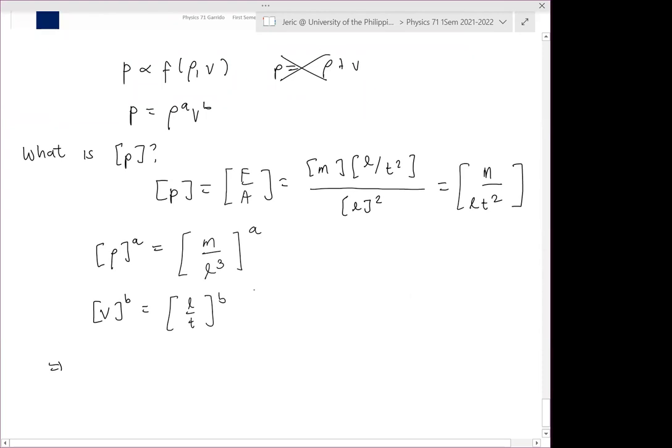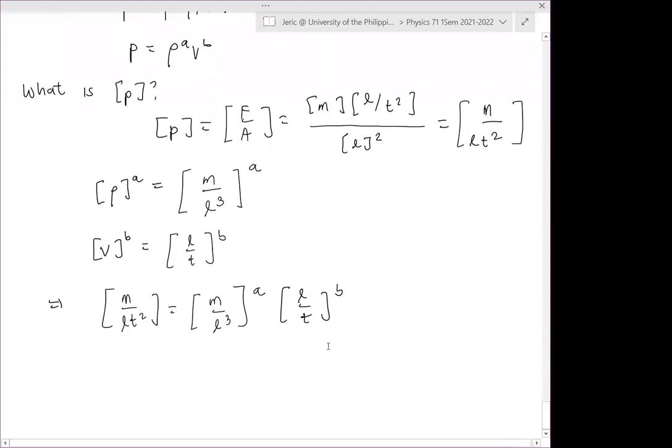Now let's compare. So this means that we want the product of this to be equal to this. So we have M over L T squared equals mass over L cubed raised to A, times L over T raised to B. Of course, what you can do there is to perform a system of equations for A and B, but it's difficult. Let me show you a simpler way. Notice that M here has only power of 1. Therefore, what can you expect about A? For it to be consistent with M?